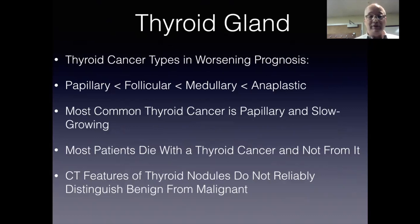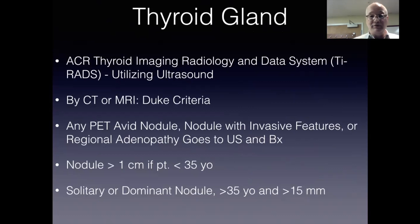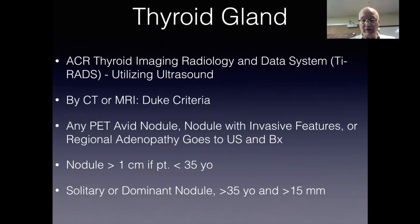The most common thyroid cancer is a slow-growing papillary cancer, and it's important to remember that most patients will die with thyroid cancer and not from it. To help risk stratify patients with thyroid nodules on CT or MRI, we use the TI-RADS DO criteria. Nodules are categorized as suspicious if any nodule is PET-avid, has invasive features, or there's regional adenopathy; if a nodule is greater than one centimeter in a patient less than 35 years of age without a prior study to establish stability; or if there's a dominant or solitary nodule greater than 15 millimeters in a patient greater than 35 years of age. These will go on to thyroid ultrasound referral.